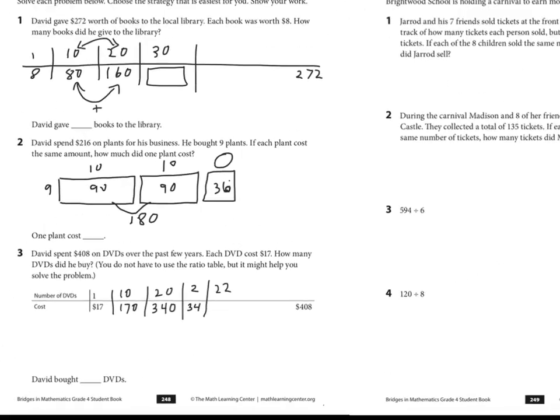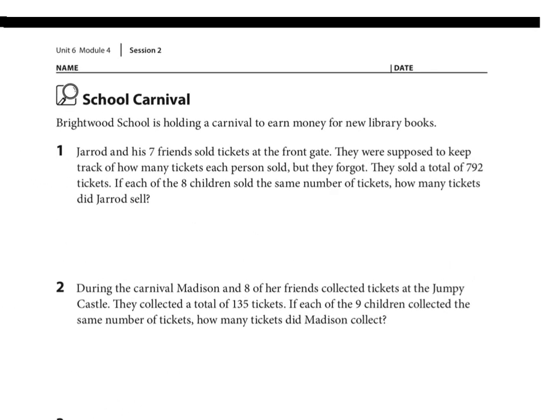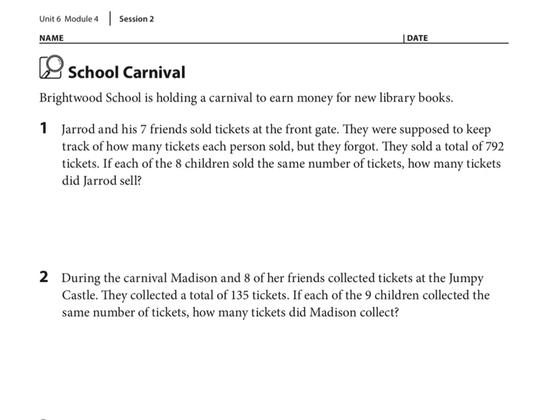We got one more page of practice up here—the school carnival. So Jared and his seven friends—so eight friends—sold tickets and they sold a total of 792 tickets. All right, hopefully you're seeing the same connection I'm seeing: eight is very close—or 792 is very close to 800—there's eight children. This should be pretty simple, right? Go straight to 100, will give you 800, then if you simply subtract, you'll have your answer.